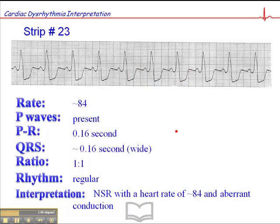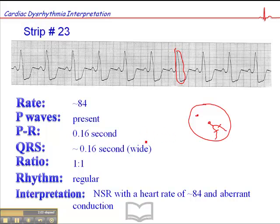So the QRS is wide — yes, absolutely. Why is it wide? Probably because of a bundle branch block. If you were to look at a 12-lead ECG: here's the SA node, AV node, bundle of His, bundle branches — there's probably either a block in the right bundle branch or a block in the left bundle branch: right bundle branch block or left bundle branch block. And that's what gives us that wide, bizarre QRS complex, giving us a sinus rhythm with aberrant conduction.